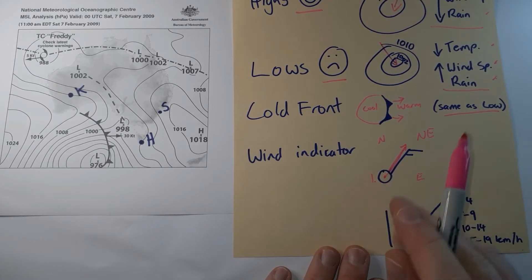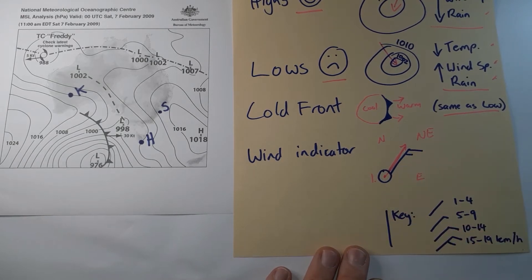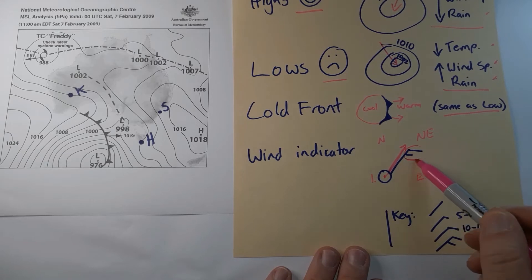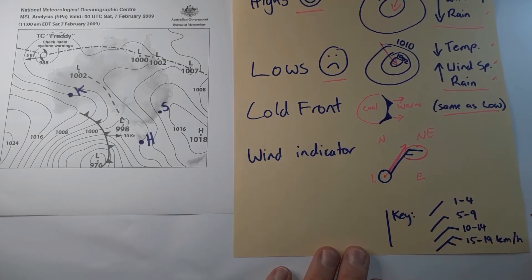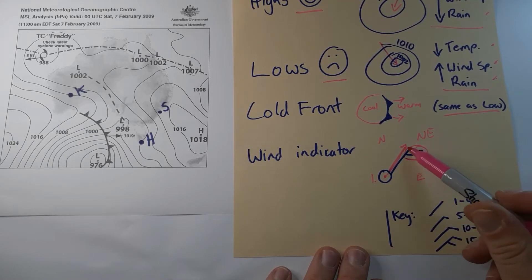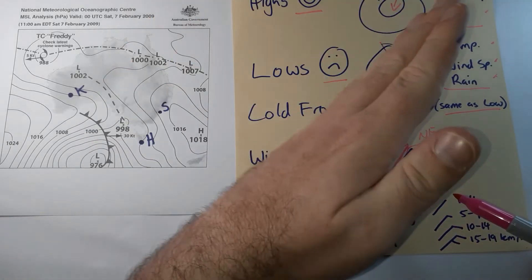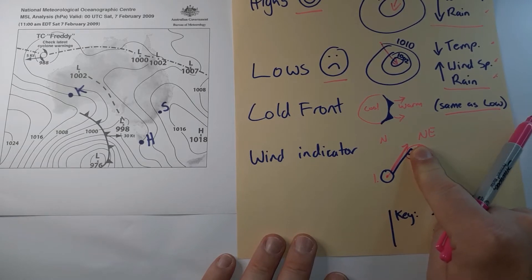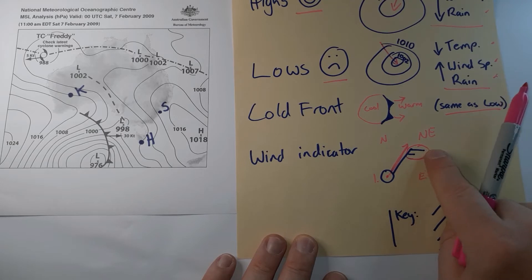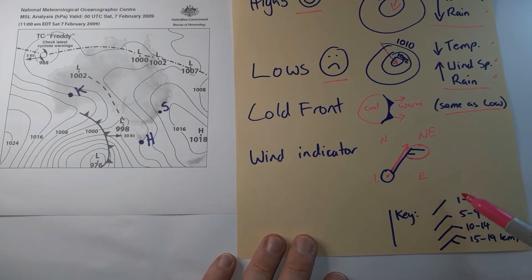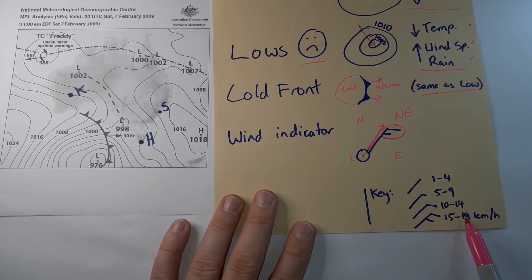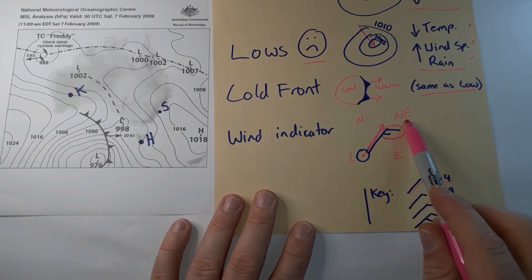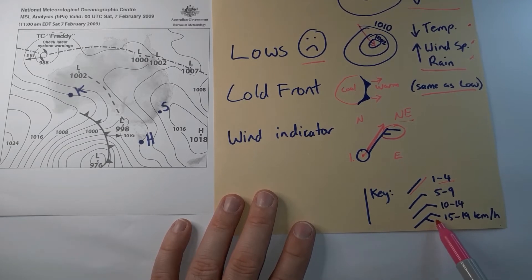I imagine I'm standing on the location dot, and the arm points away from the dot towards the name of the wind. At the end of the arm are what I call 'speed fingers.' If there are no fingers, it's a very low wind speed. Half a finger, one, or one and a half to two fingers increases the speed — more fingers means higher speed. There'll often be a key. In this example, I've got a northeasterly wind, and with one and a half fingers, the speed is about 15 to 19 kilometres per hour.